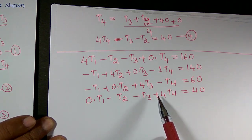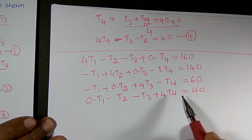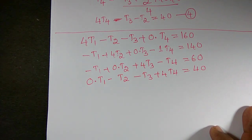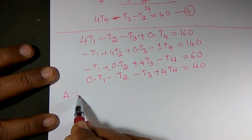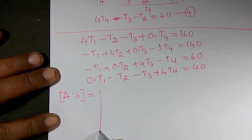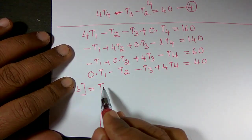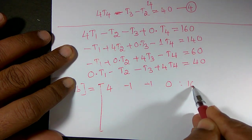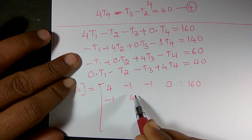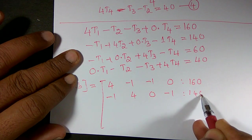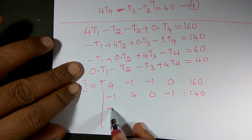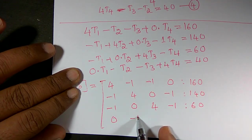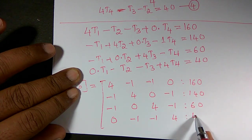We can solve this linear system using Gauss elimination. For that, we construct the augmented matrix [A | B]. The matrix is: row 1: 4, -1, -1, 0 | 160; row 2: -1, 4, 0, -1 | 140; row 3: -1, 0, 4, -1 | 60; row 4: 0, -1, -1, 4 | 40. This is the augmented matrix.